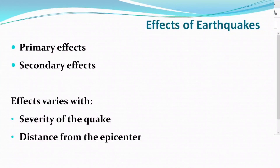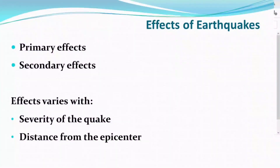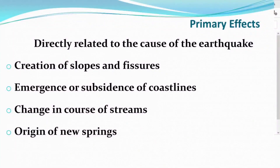The effects of earthquakes can be classified as primary and secondary effects. These effects vary with the severity of the earthquake and the distance from the epicenter. Primary effects are directly related to the course of earthquakes: creation of slopes and fissures, emergence or subsidence of coastlines, change in course of streams, and formation of new springs.